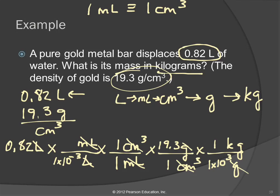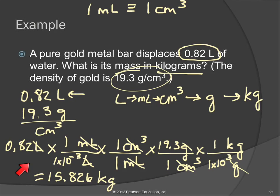So: 0.82 divided by one EE minus three, times one, divided by one, times 19.3, divided by one EE three, equals 15.826, and the unit will be kilograms. How many significant figures? Two — the initial number 0.82 had only two significant figures. The metric conversions are exact, and the density has three sig figs. So we round this off to 16 kilograms.